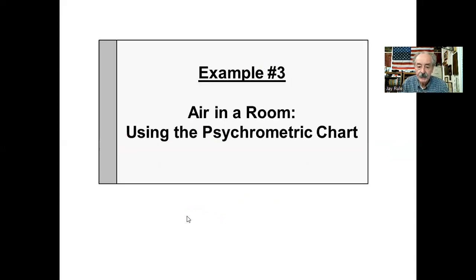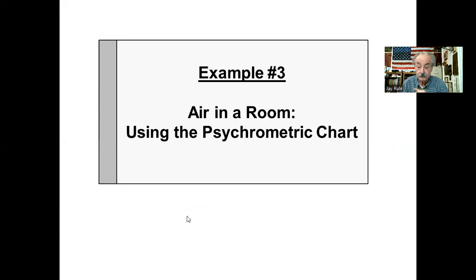Example three: exact same problem, but this time using the psychrometric chart in the back of the book instead of the steam tables. This is an alternative way to get specific volume and humidity ratio, and a lot of students find this chart confusing, so let's walk through the most simple example.